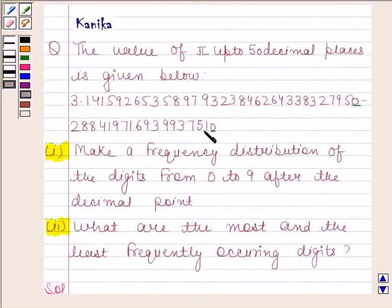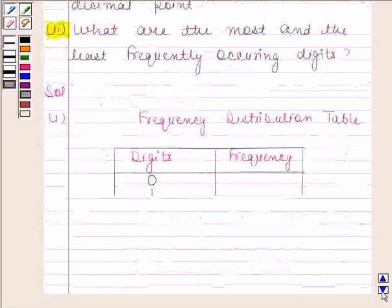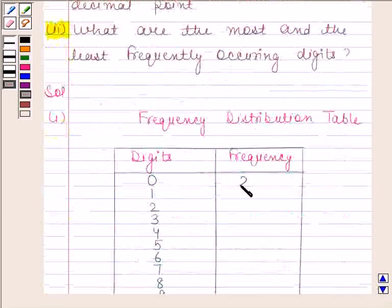0 appears 2 times after the decimal point. So frequency of 0 is 2.